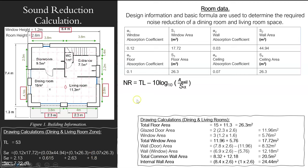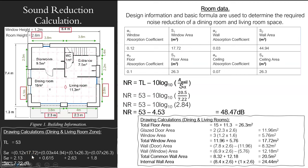Once I've got all those figures, I've put my Sabine down here. I've got my TL here: 53. And then I've got my area of my wall, which I've worked out down here. My Sabine I've worked out using this table — I've put my absorption, my areas, and that gives me all the values I need. So my noise reduction is 53, which is my transmission loss, take away 4.53. So all of those walls are basically reflecting back 4.53 decibels, which means I'm only reducing the noise by 48.47 decibels.